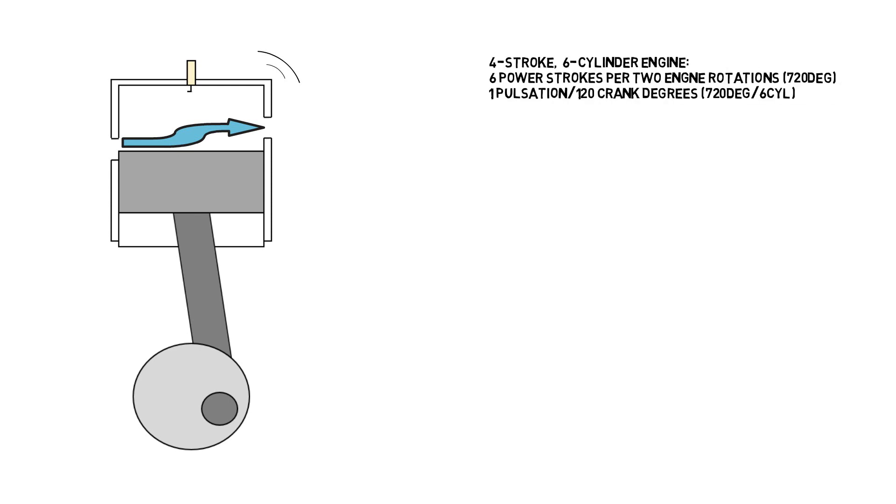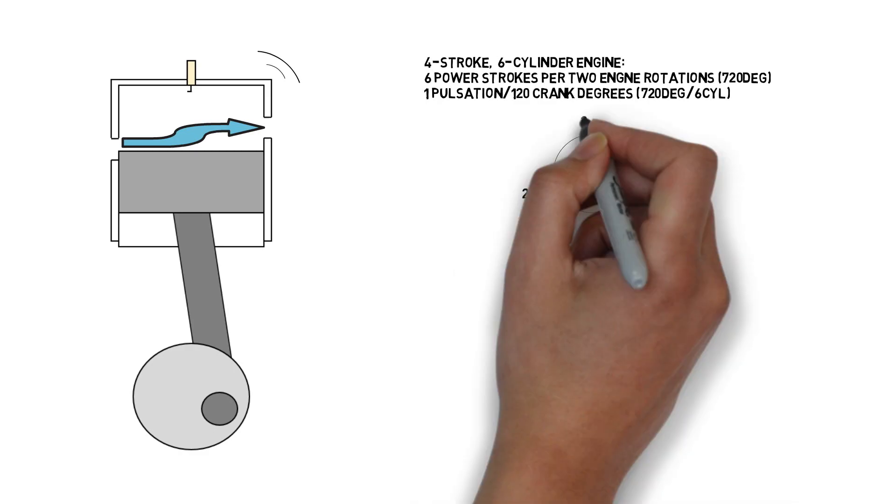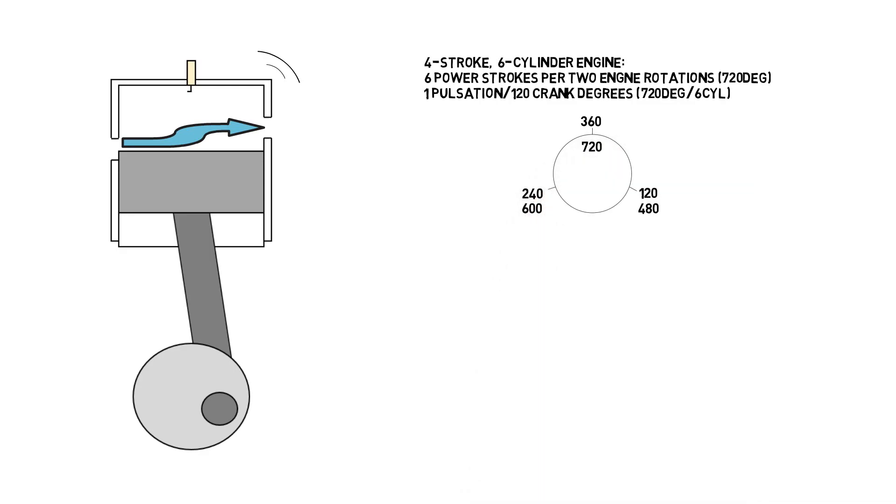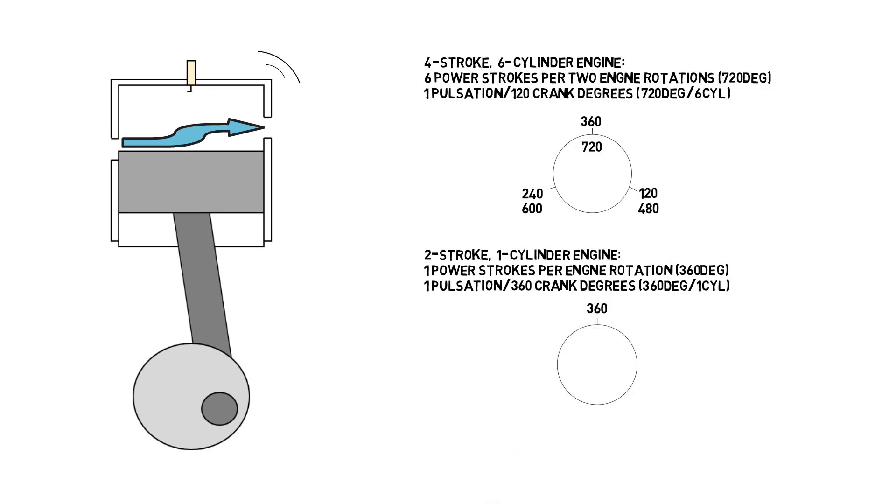In a four-stroke, six-cylinder engine, every cylinder has a power stroke every two rotations or 720 degrees. This means there is a bang every 120 degrees. A two-stroke engine has a pulse every 360 degrees. They are also known for high oil consumption from adding oil to the fuel to lubricate the cylinder.